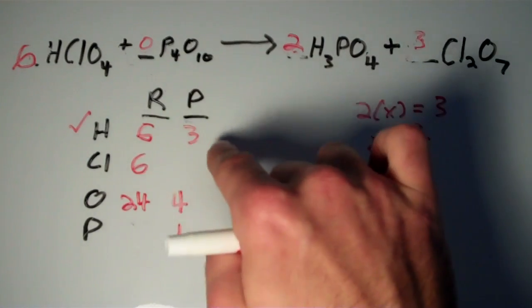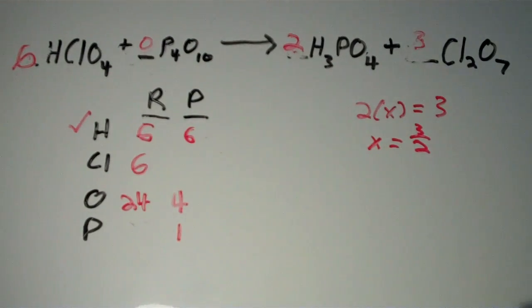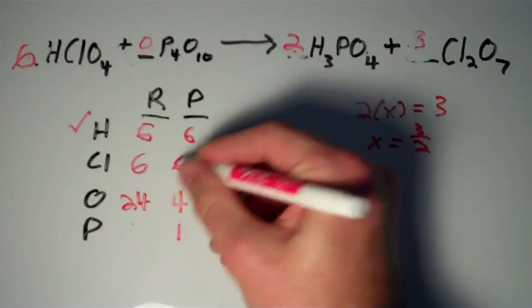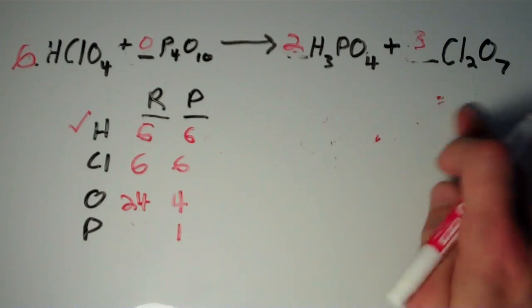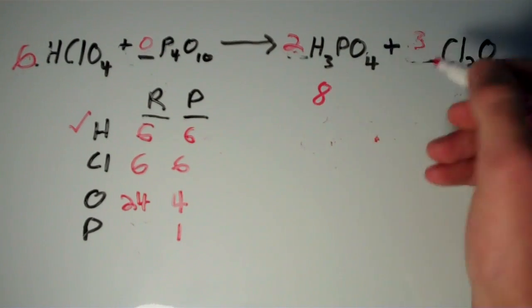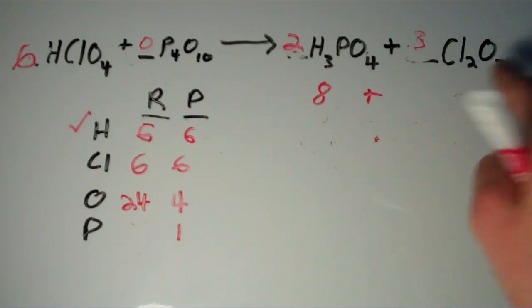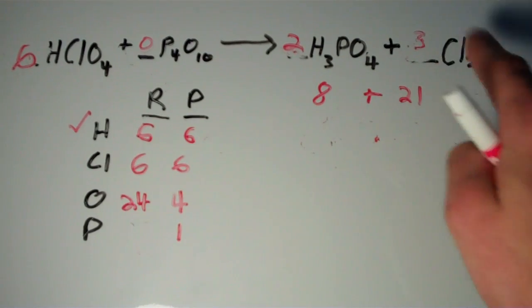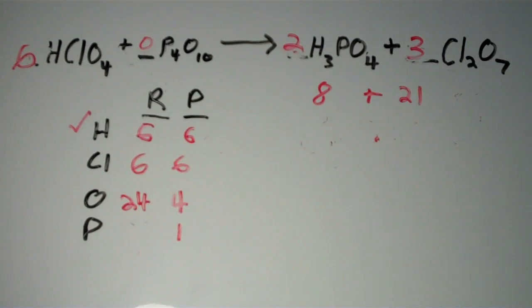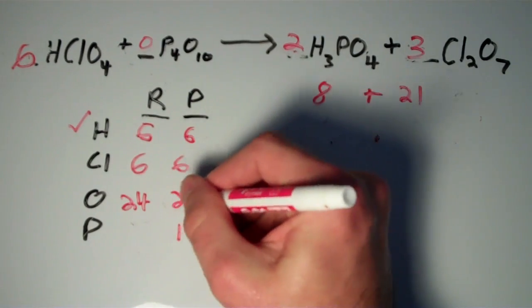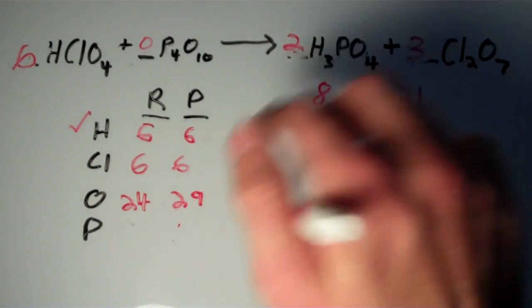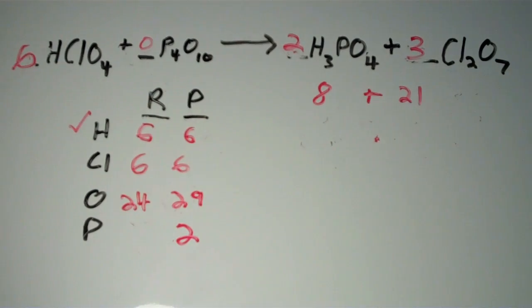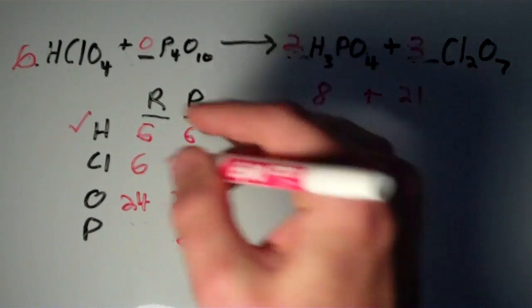And on the product side, we have looks like six hydrogens. Should be because we already balanced it. Six chlorines. Yep. Three times two is six. And then how many oxygens do we have? Here's the tricky part. It looks like eight of our oxygens are coming from this one. Two times four is eight. And then 21 of the oxygens are coming from this one because it's three times seven is 21. So if we add eight oxygens plus 21 oxygens, we will get 29 oxygens. And then we have two phosphorus. Two times one is two.